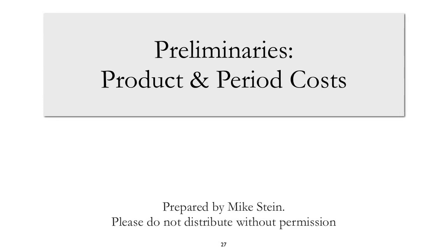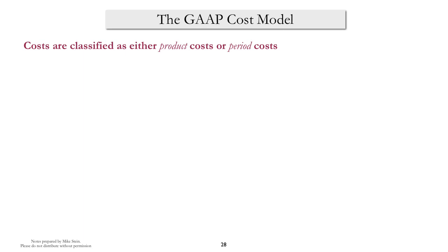Continuing with our preliminary video cast, we're going to take a very brief look at product and period costs. The distinction between product costs and period costs is really one of the most important decisions that a practicing managerial accountant must make. The GAAP cost model — the model that we use for preparing financial statements — requires a cost to be either a product cost or a period cost.